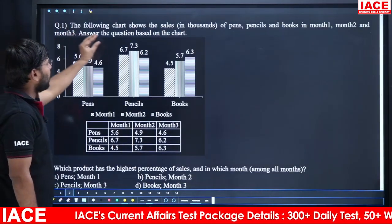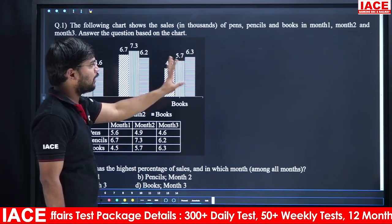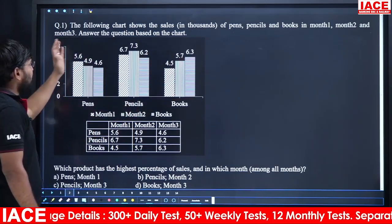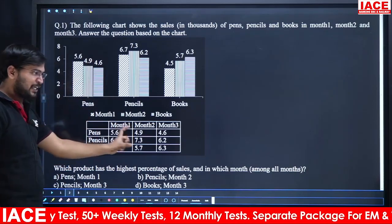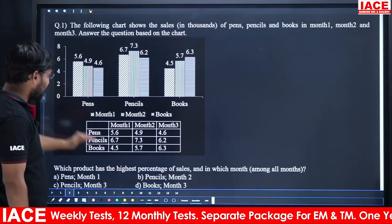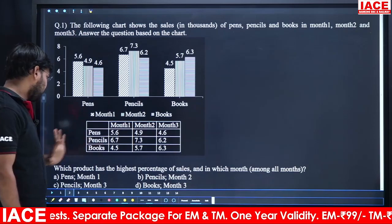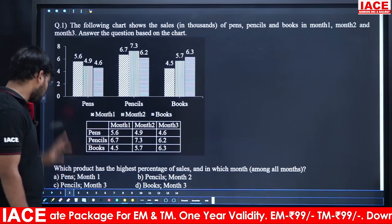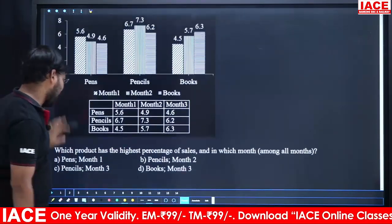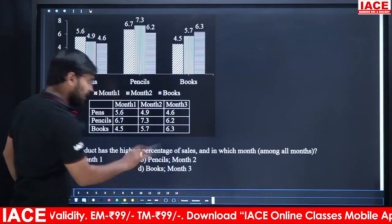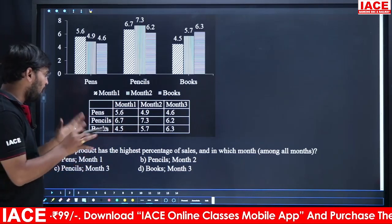First question: the following chart shows the sales in terms of thousands of pens, pencils and books in month 1, month 2 and month 3. Answer the following questions. The data is presented in tabular format. Question 1: which product has the highest percentage of sales, and in which month among all the months?